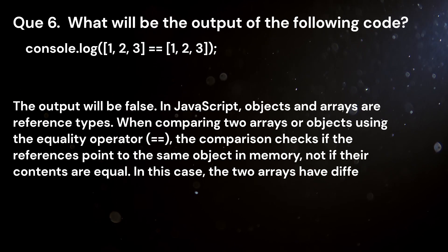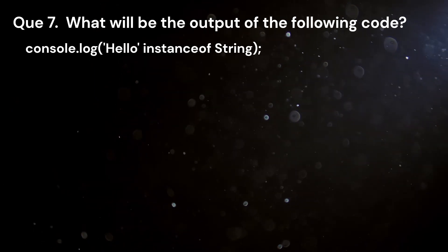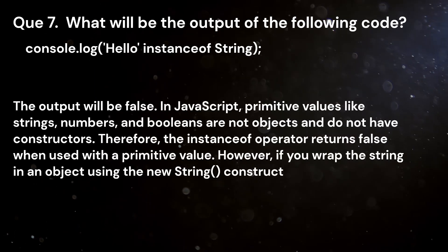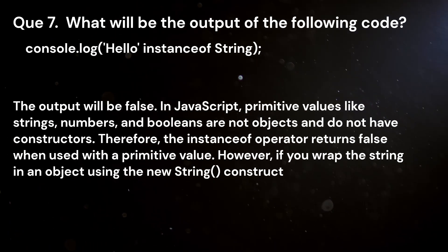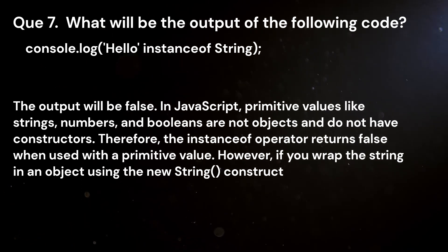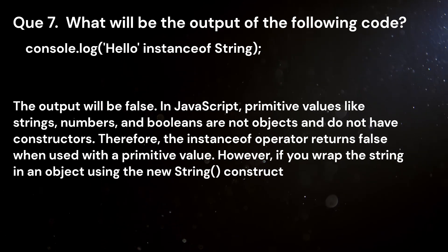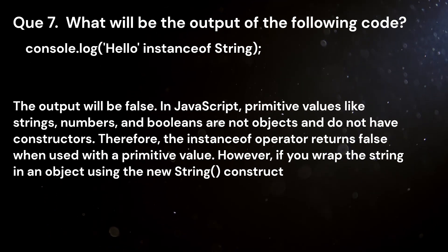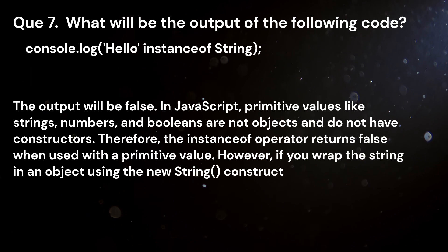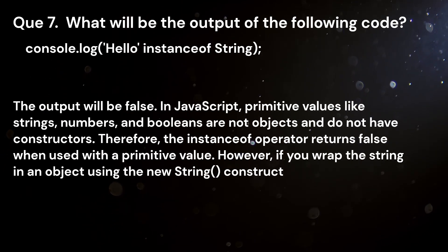Question 7. What will be the output of the following code? console.log("hello" instanceof String). Answer. The output will be false. In JavaScript, primitive values like strings, numbers, and booleans are not objects and do not have constructors. Therefore, the instanceof operator returns false when used with a primitive value. However, if you wrap the string in an object using the new String constructor, the output would be true.